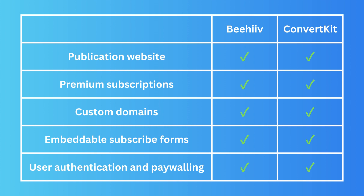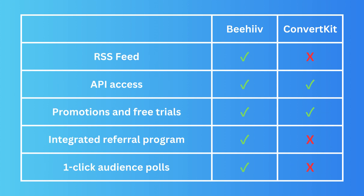RSS feed is a function that only Beehive has — ConvertKit does not. It may not be critical for everyone, but if you need it, it matters. Both platforms offer promotions and free trials. I think the free plan of Beehive is much better than the free plan of ConvertKit, but you should test it yourself.